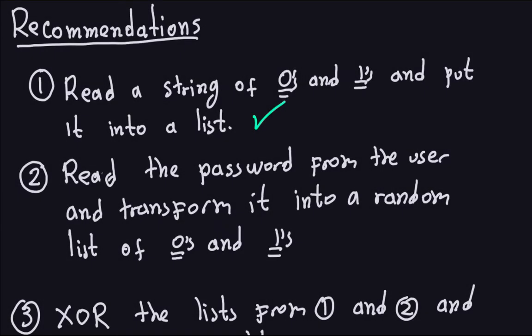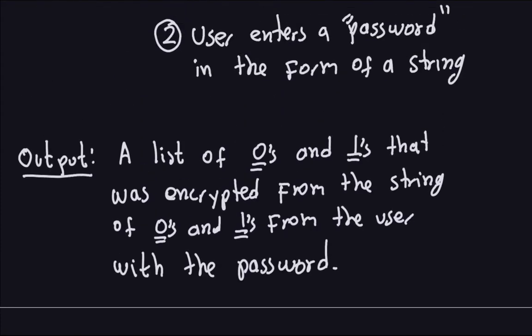Hello and welcome again. This is the second part of the series of videos about implementing the stream cipher in Java. In the previous video, what we did was read the string of zeros and ones and put it into a list — a string of zeros and ones input by the user. Now the next thing we want to do is implement the stream cipher. Let me scroll all the way up to where I have the picture of the stream cipher.